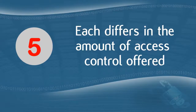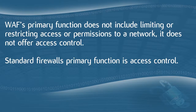The fifth difference is that each differs in the amount of access control offered. Because a WAF's primary function does not include limiting or restricting access or permissions to a network, it does not offer access control. This, however, is one of the standard firewall's primary functions. These settings are often customisable to suit the user's needs — a firewall will commonly be enacted to deny access to folders, websites, and networks, only allowing those with proper credentials permission.